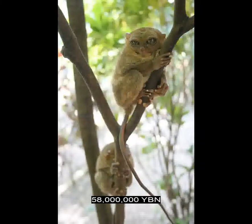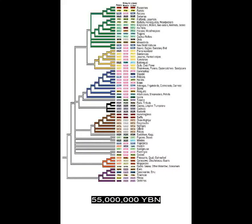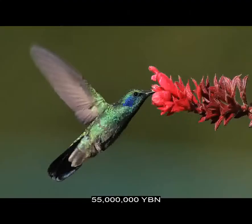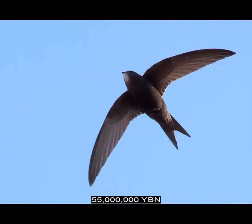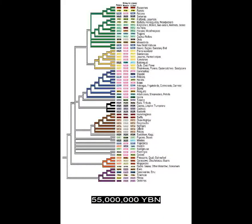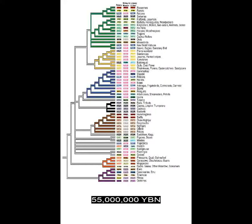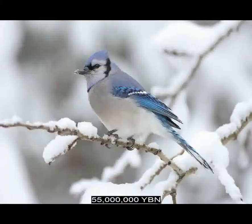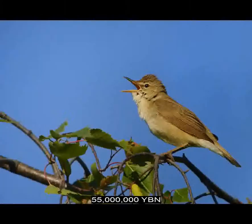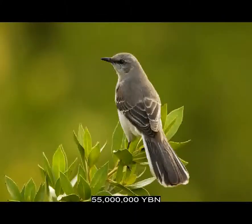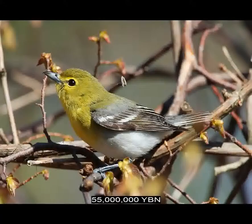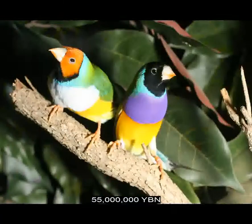Primates tarsiers. Birds Apodiformes — hummingbirds, swifts. Birds Piciformes — woodpeckers, toucans. Birds Passeriformes — perching songbirds. This order includes many common birds: crows, jays, sparrows, warblers, mockingbirds, robins, orioles, bluebirds, vireos, larks, finches.